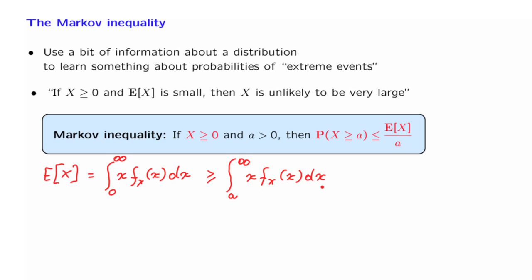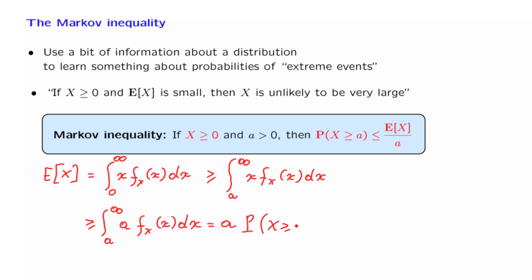Now let us look at this integral from a to infinity. Over the range of integration we're considering, x is at least as large as a. Therefore, the quantity that we're integrating from a to infinity is at least as large as a times the density of X. We can take this constant a outside the integral, and what we're left with is the integral of the density from a to infinity, which is nothing but the probability that the random variable takes a value larger than or equal to a. Comparing the two sides of this inequality gives us exactly what the Markov Inequality states.